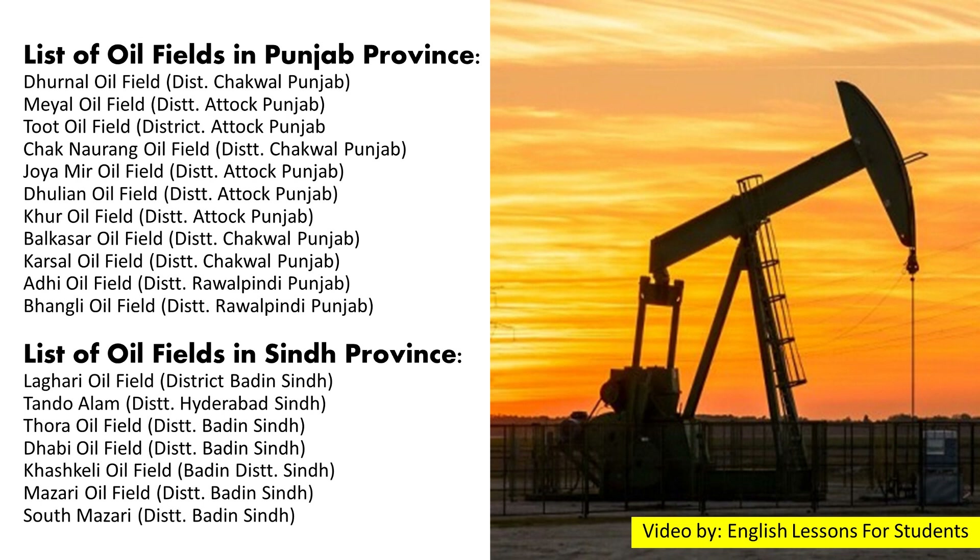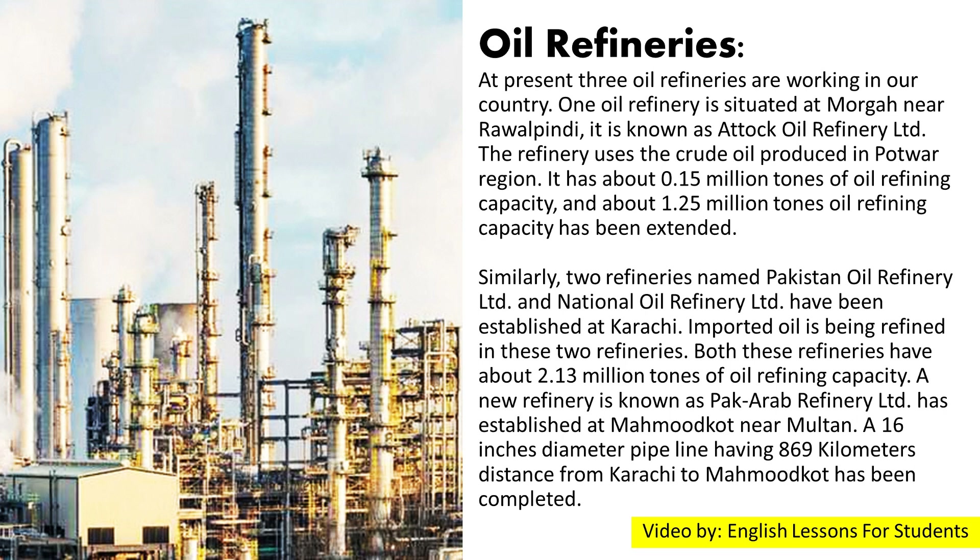Oil refineries: At present, three oil refineries are working in our country. One oil refinery is situated at Morgah near Rawalpindi, known as Attock Oil Refinery Ltd. That refinery uses the crude oil produced in the Potwar region and has about 0.15 million tons of oil refining capacity, which has been extended to about 1.25 million tons. Similarly, two refineries named Pakistan Oil Refinery Ltd. and National Oil Refinery Ltd. have been established at Karachi. Imported oil is being refined in these two refineries, and both have about 2.13 million tons of oil refining capacity.